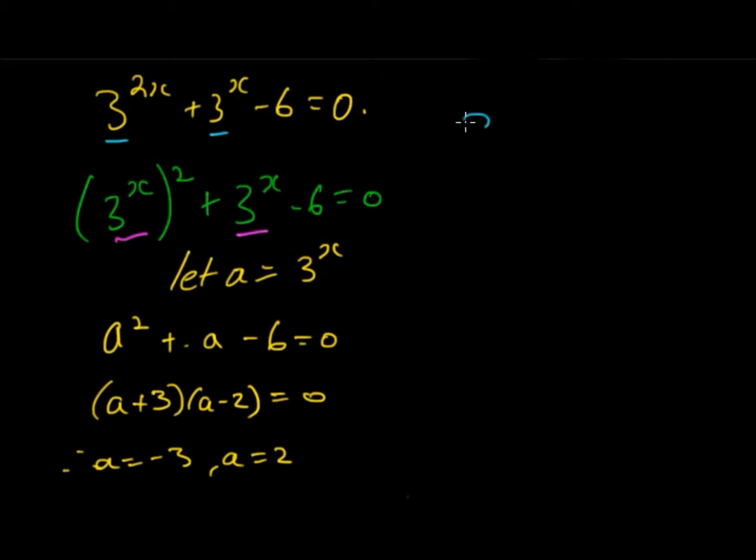So continuing this we have 3^x = -3 and 3^x = 2. Now when you have 3 to the power of something, a positive number to the power can't give us a negative value because 3^x when x is positive will obviously be positive. When x is negative this equals 1 over 3^x, and if you graph it you can see that it never is negative.